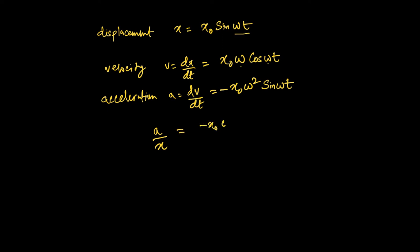It's negative x naught omega squared sine omega t divided by x naught sine omega t. So the sine function cancels out, the x naught cancels out. We're just left with negative omega squared, or a equals negative omega squared x, which is exactly what we were looking at two minutes ago on the previous slide.